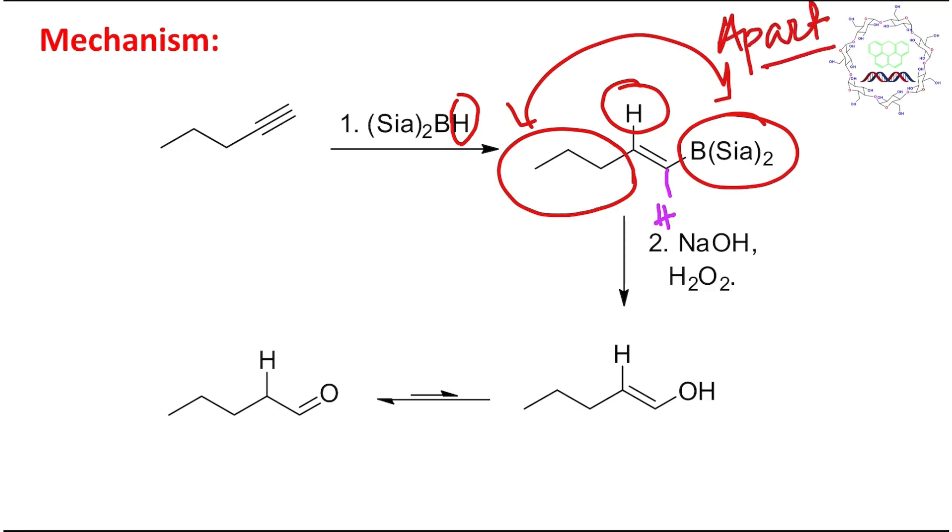So this is the hydroboration product. This first step I can consider hydroboration. Second step is oxidation because sodium hydroxide and hydrogen peroxide reacted with this alkyl boron, or better to say, alkyne boron.